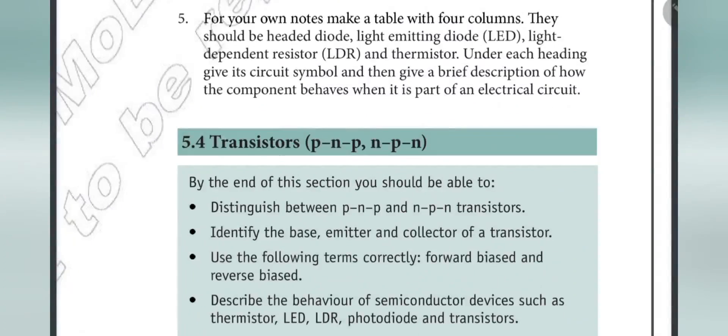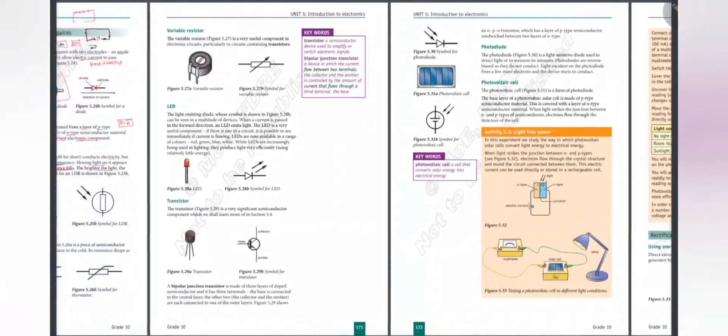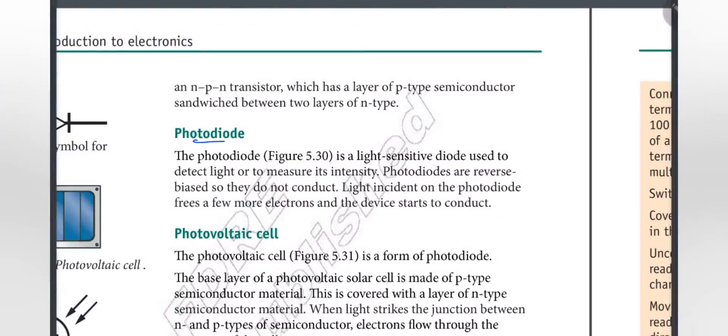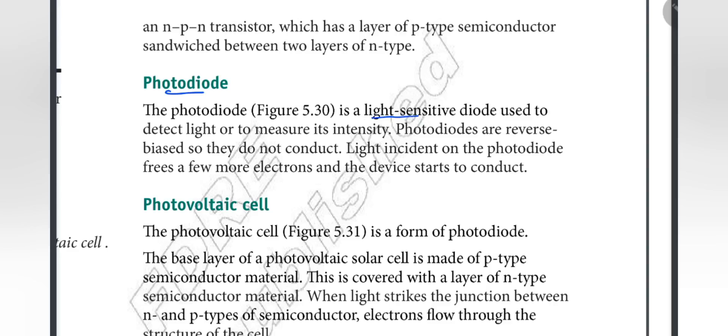Photodiode. The photodiode is light sensitive. They are used to detect light or to measure its intensity. Photodiodes are reverse biased, so they do not conduct. Light incident on the photodiode frees up more electrons and the device starts to conduct.